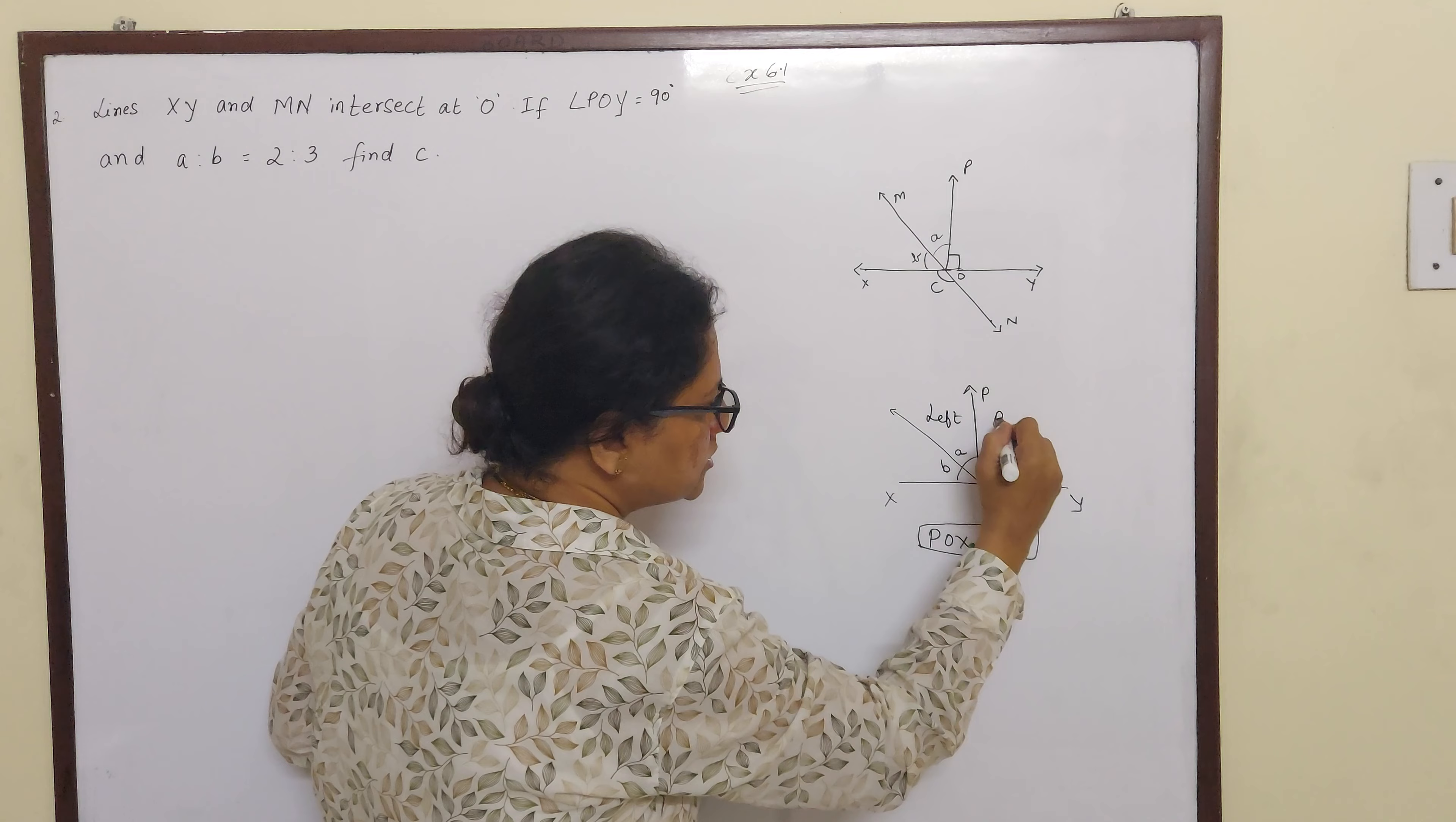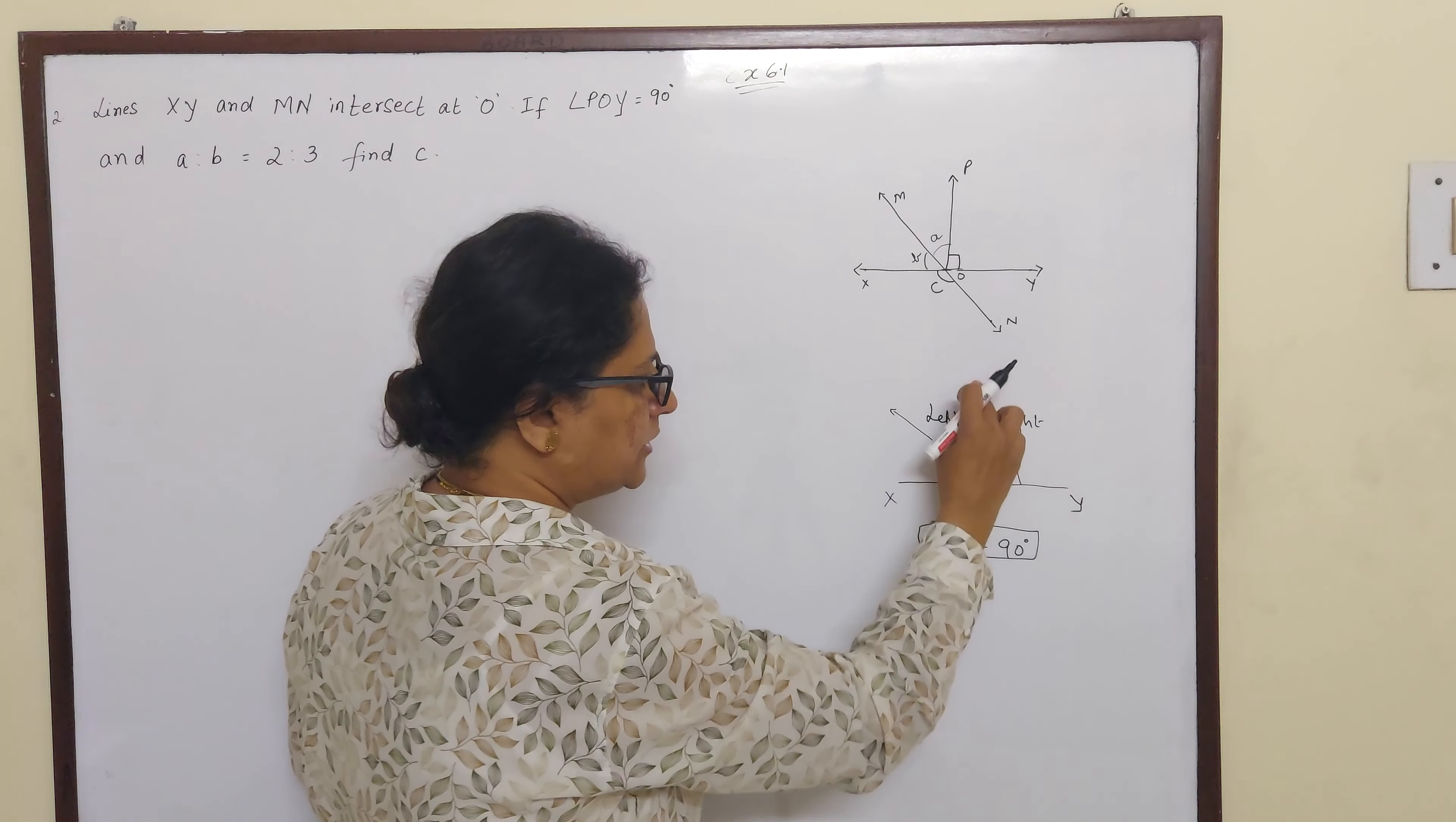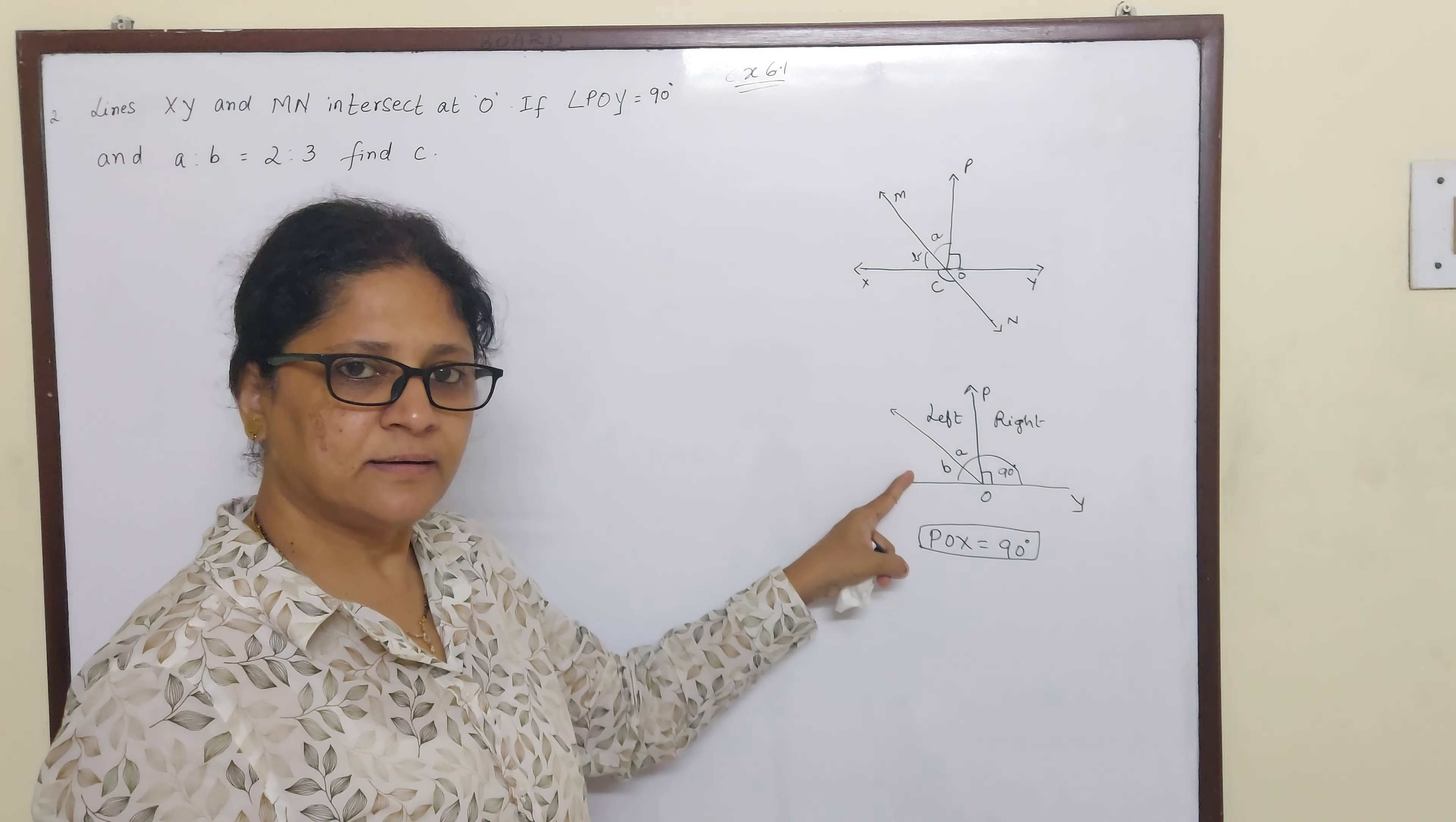This is your left side and this is your right side. Right side is 90 degrees and your left side is also 90 degrees. That means A plus B is 90 degrees.